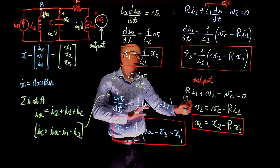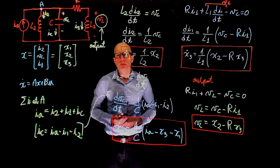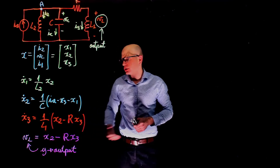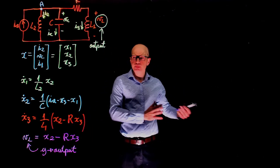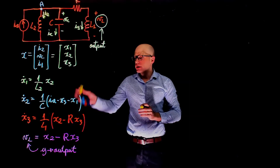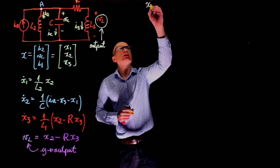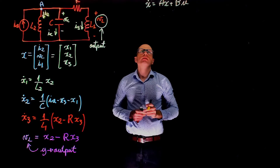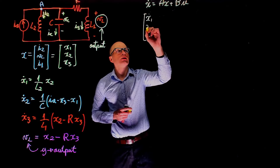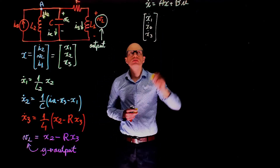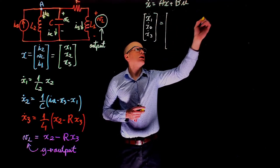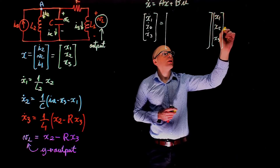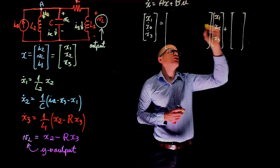Now let's represent these equations in the standard matrix form. We have X-dot = A·x + B·U, where U is the input IA, and x-dot is the column vector [x1-dot, x2-dot, x3-dot]. This equals matrix A times state vector [x1, x2, x3] plus matrix B times input IA.